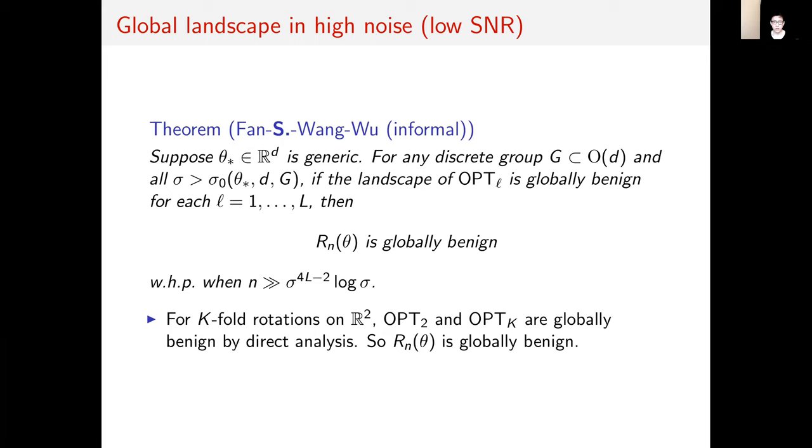Our philosophy is that minimizing the negative log likelihood is roughly equivalent to successively minimizing these moment matching problems. Roughly speaking, our result says that if these moment matching problems have good, benign global landscapes, then the negative log likelihood also has a globally benign landscape for sufficiently large sample size. One can check that the moment matching losses are globally benign for k-fold rotations on the plane, which implies that the negative log likelihood also is globally benign.